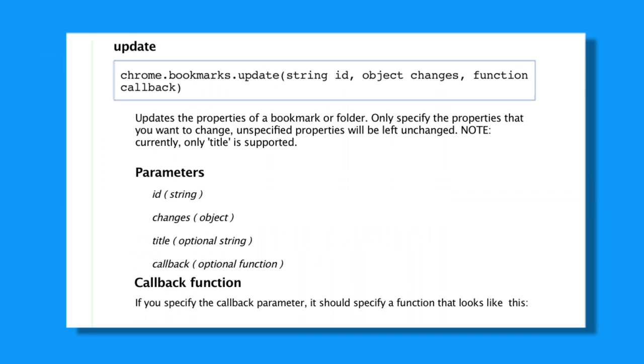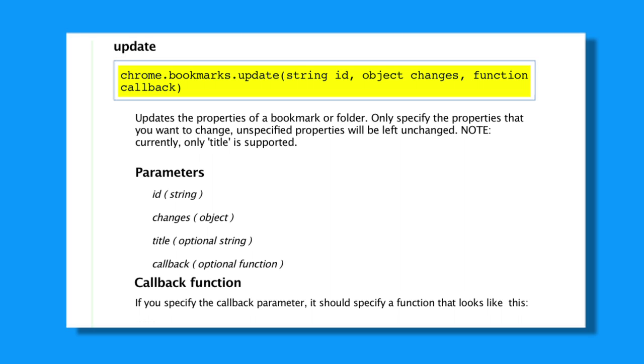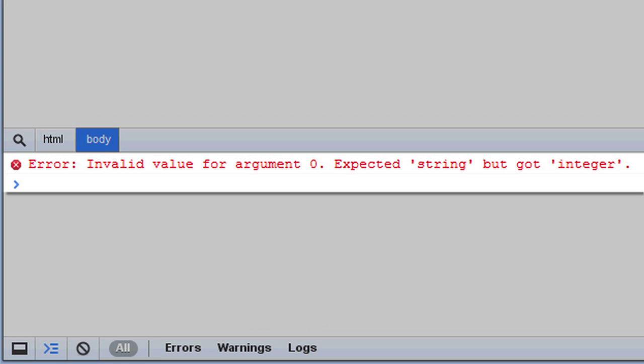If you look at the documentation for this call, you can see that the ID that chrome.bookmarks.update takes as its first argument is a string, not an integer. When this call executes, the extension system will throw an exception, pointing out the error. The extensions API uses an implementation of JSON schema which declares the name, type, number, and position of its function arguments. If you call it with the wrong types or wrong number of arguments, it'll complain.